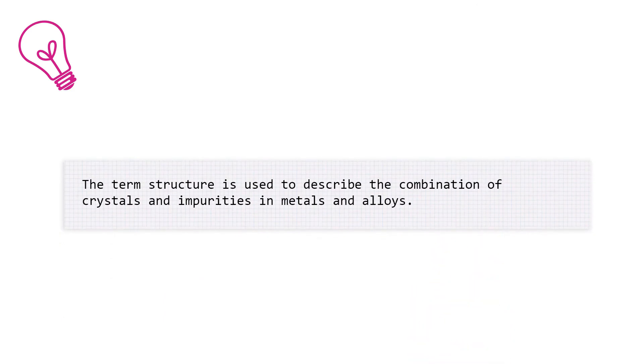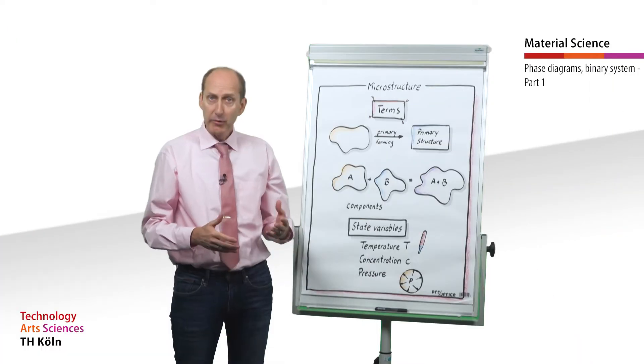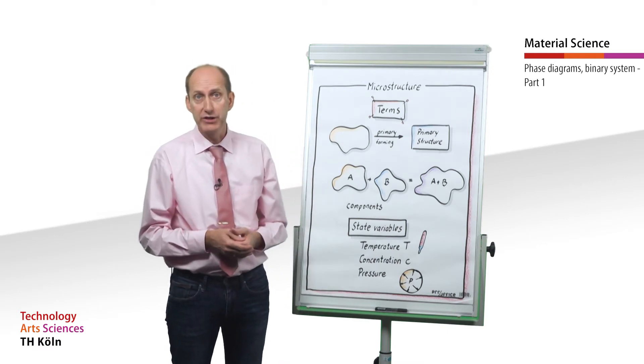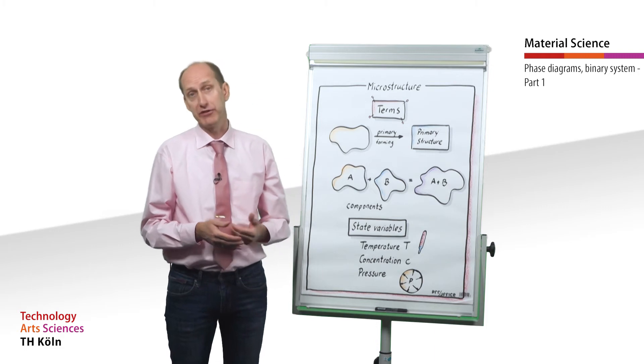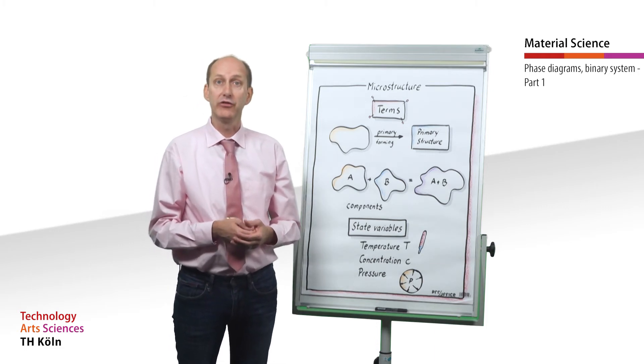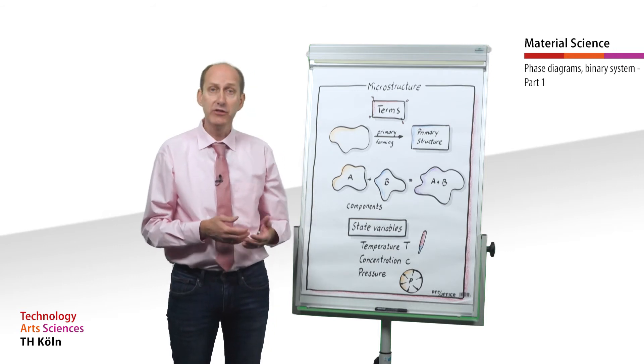The term structure is used to describe the combination of crystals and impurities in metals and alloys. Primary structures are the result of primary forming, which is the initial shaping of an originally shapeless matter. Primary structures are transformed into secondary structures by heat treatment, conversion, or forming processes carried out in the solid state.